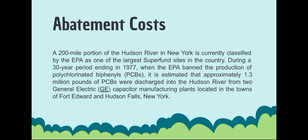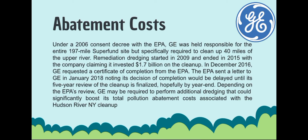As an example of an abatement cost: a 200-mile portion of the Hudson River in New York is currently classified by the EPA as one of the largest superfund sites in the U.S. During a 30-year period ending in 1977, when the EPA banned the production of polychlorinated biphenyls or PCBs, approximately 1.3 million pounds of PCBs were discharged into the Hudson River from two General Electric capacitor manufacturing plants located in Fort Edward and Hudson Falls, New York. Under a 2006 consent decree with the EPA, GE was held responsible for the entire 197-mile superfund site but specifically required to clean up 40 miles of the upper river.